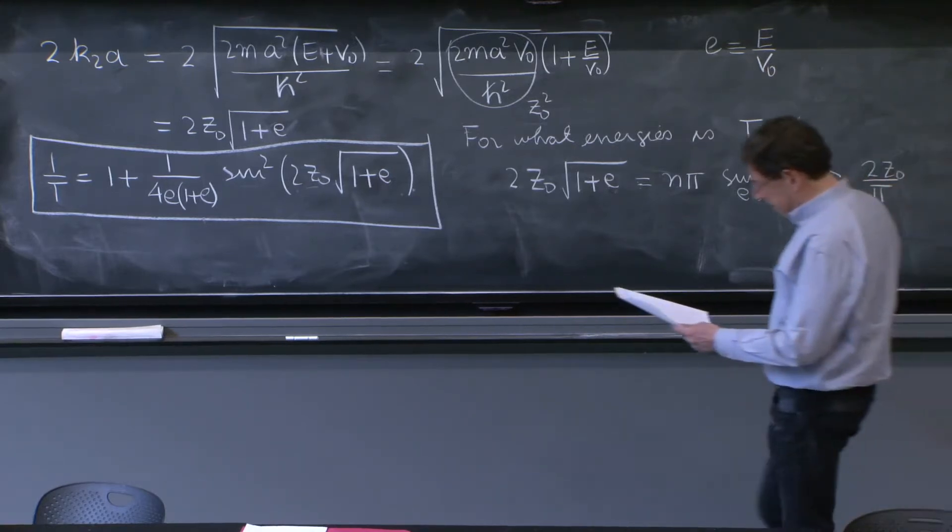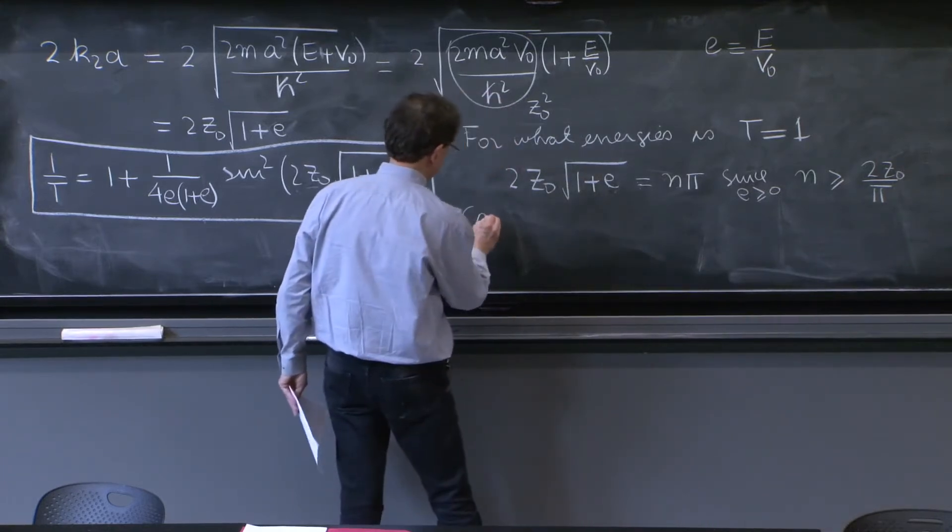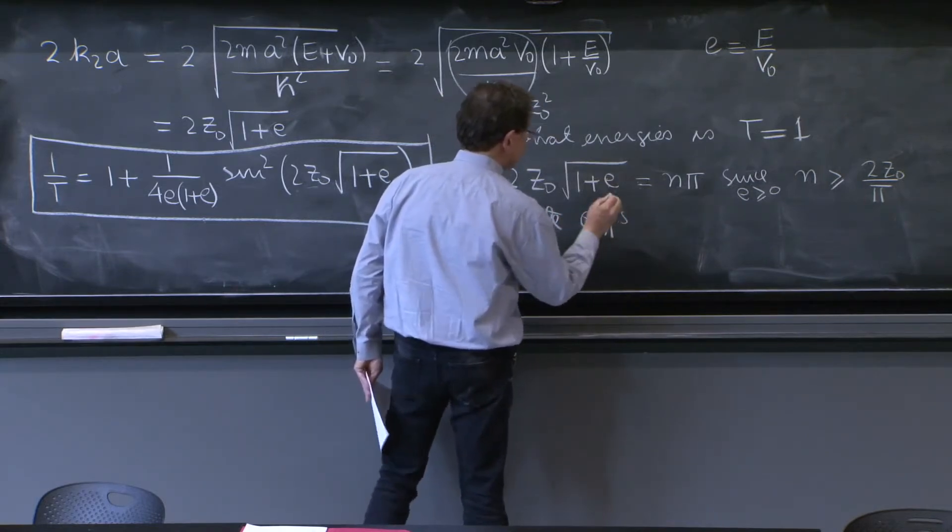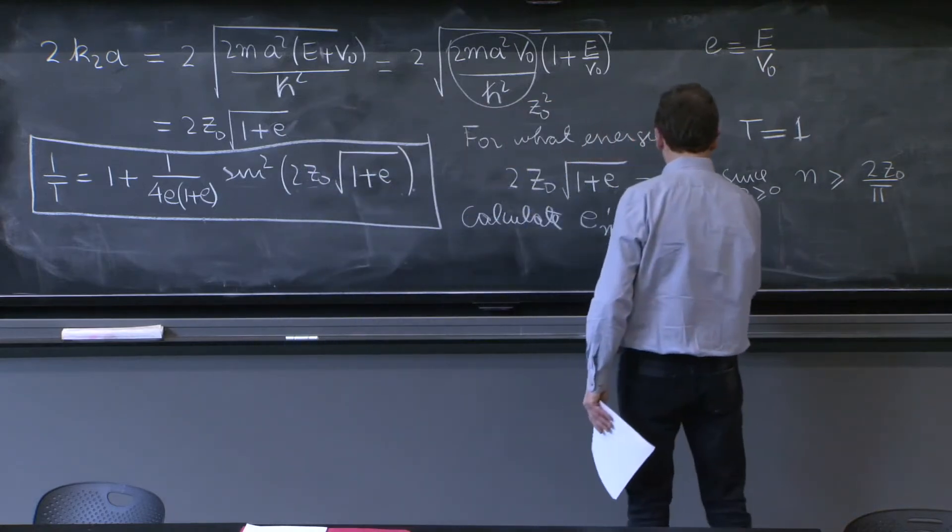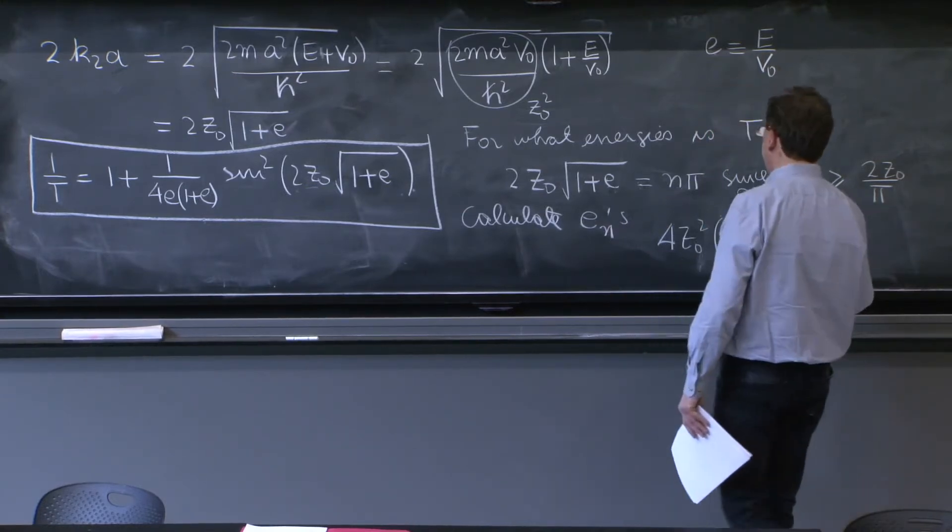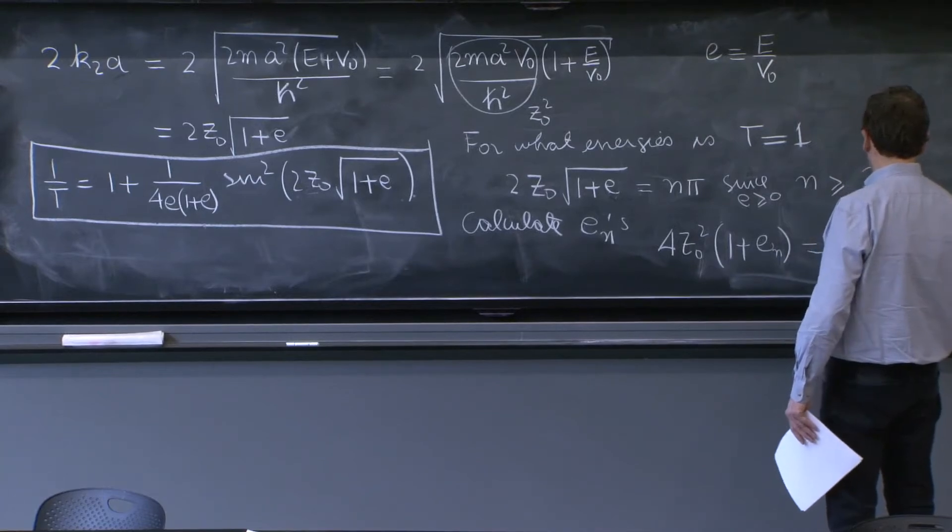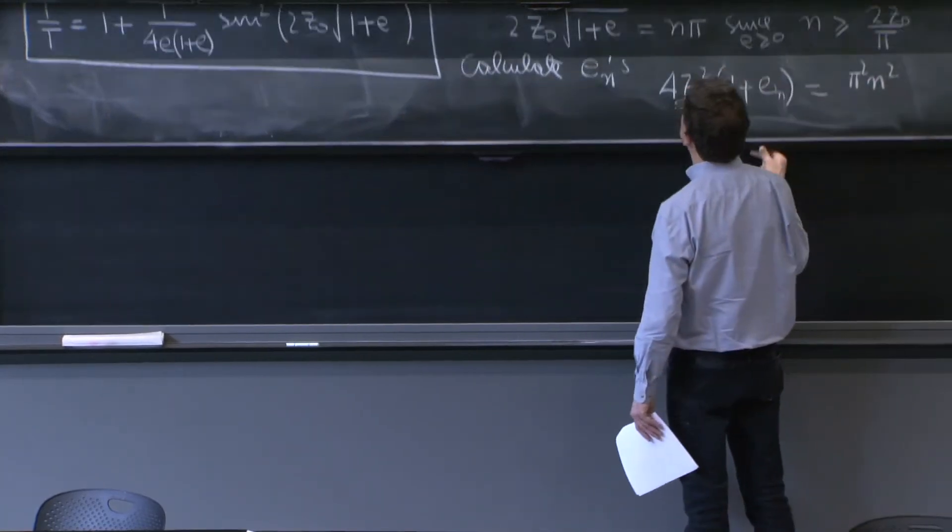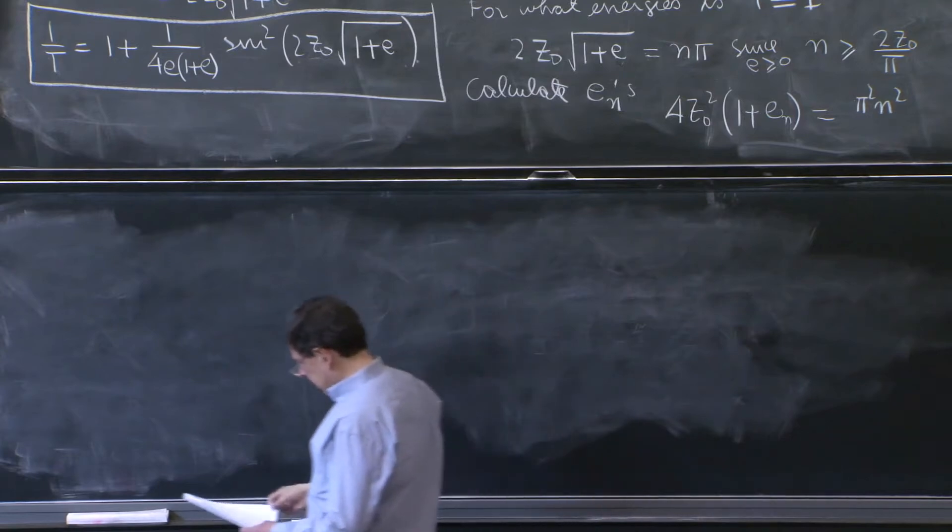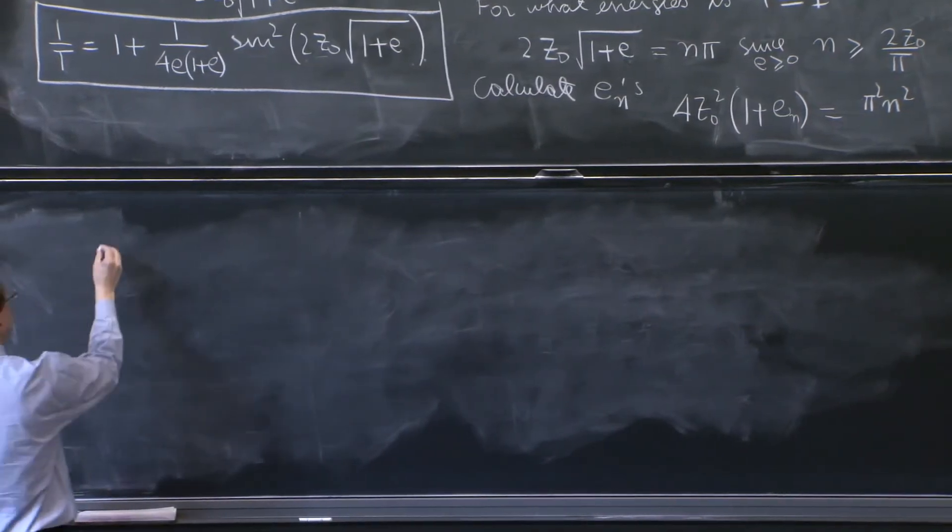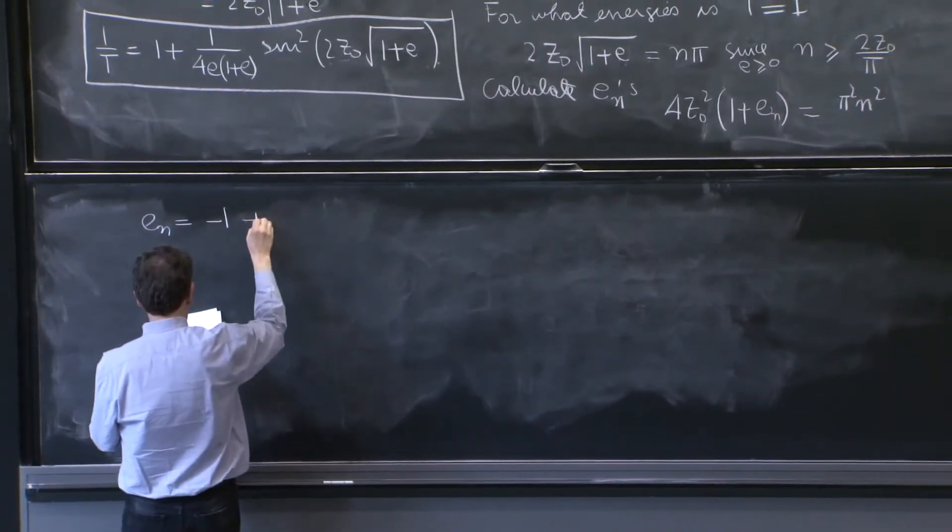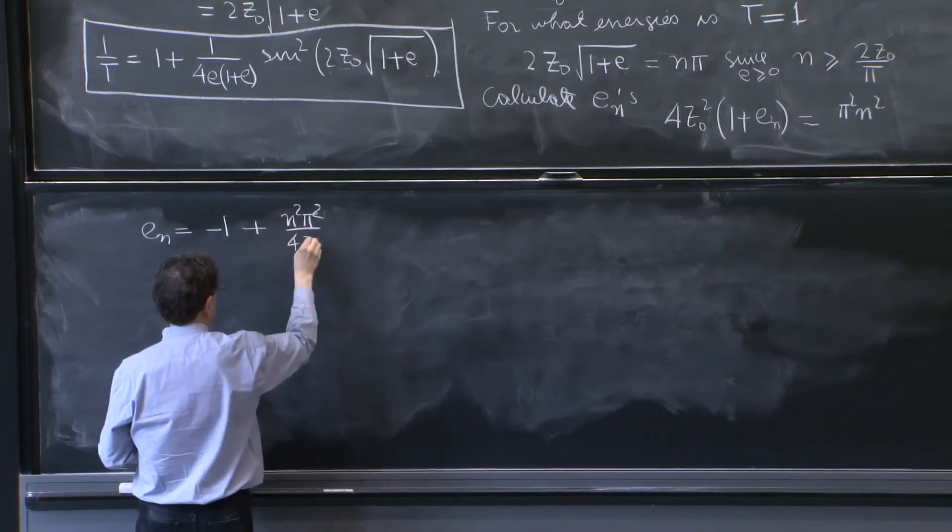All right, so this is a possibility, but then let's calculate those values of the energies. So let's calculate those En's. So what do we have? We square the left-hand side, 4z0 squared times 1 plus En is equal to pi squared n squared. And En is equal to minus 1 plus n squared pi squared over 4z0 squared.